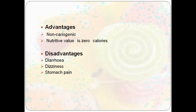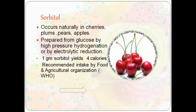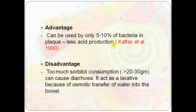Poly alcohols include sorbitol and xylitol. Sorbitol is commonly seen in the chewing gum brand Orbit, and is naturally found in cherries, plums, pears, and apples. It is prepared from glucose by high-pressure hydrogenation or electrolytic production; one gram gives 4 calories. Only 5 to 10% of sorbitol can be utilized by bacteria for acid production, so the rest is untouched, making it an alternative to sucrose with very low cariogenic potential. However, excessive consumption may cause diarrhea due to its laxative property from osmotic transfer of water.